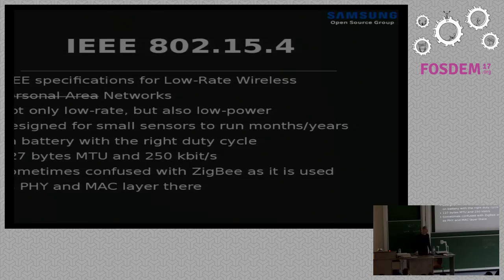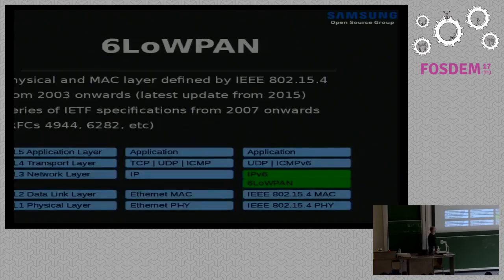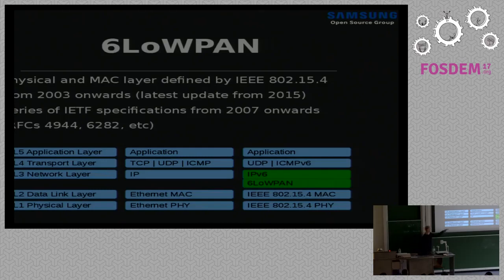Sometimes 15.4 is confused with ZigBee, because ZigBee uses the same physical/MAC layer from 802.15.4 and puts other things on top for routing and addressing. 6LoWPAN is built on top of the IEEE standard. 6LoWPAN itself is specified by the IETF — the same people who gave us most of the internet protocols today. They started in 2003 and it's still ongoing. 6LoWPAN is really just an adaptation layer sitting between the MAC and the IP layer.